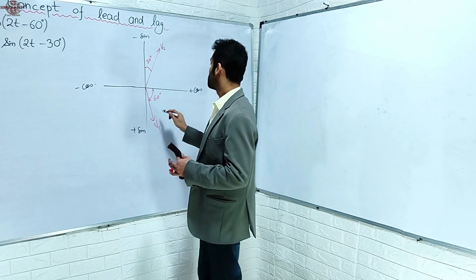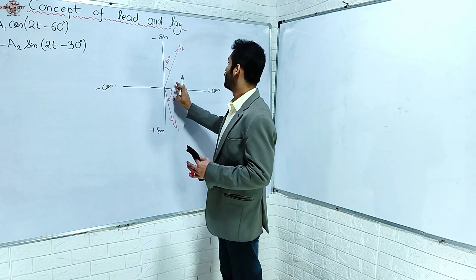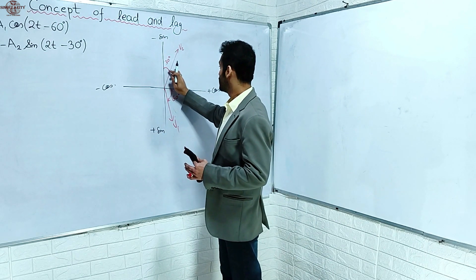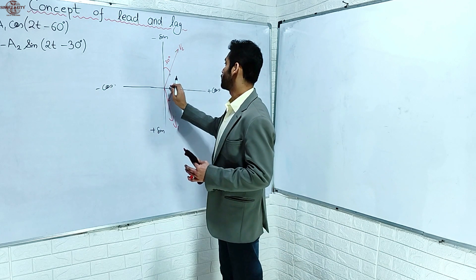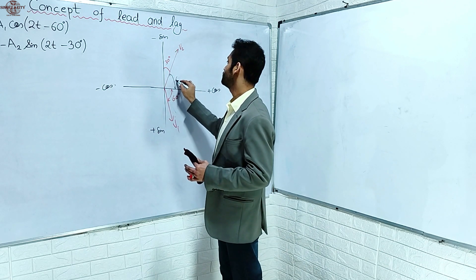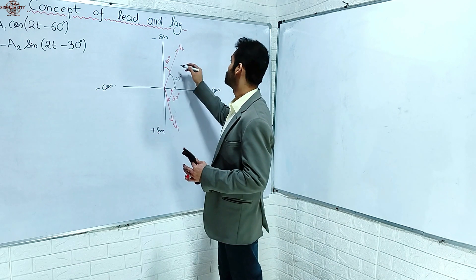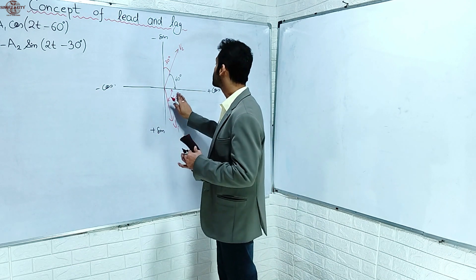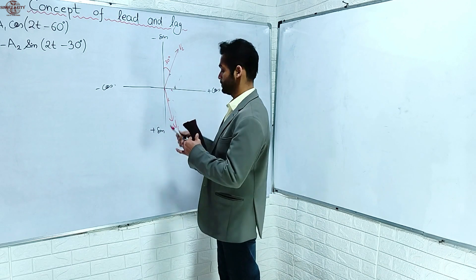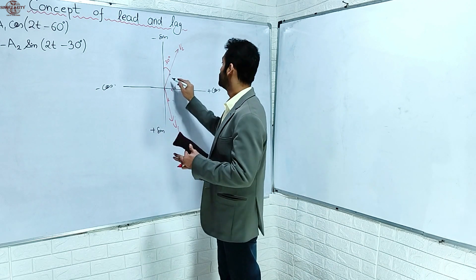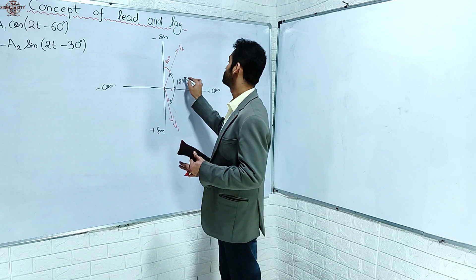So V1 is at 60 degrees and V2 is at 30 degrees. The angle between them: if this is 30 degrees, then combining we get - if it is 90 degrees on one side, then this is 60 degrees on the other side. So the angle between V1 and V2 is 120 degrees.